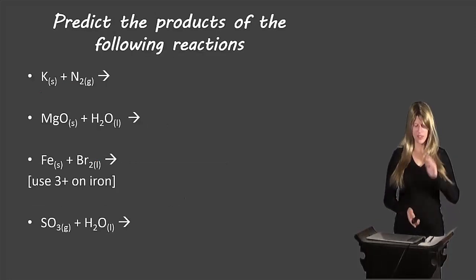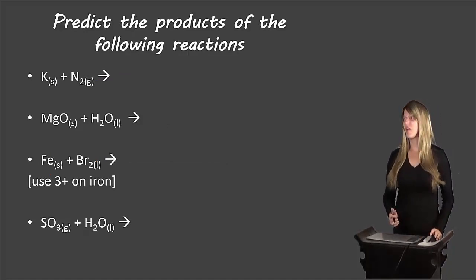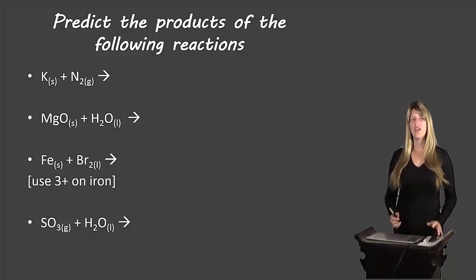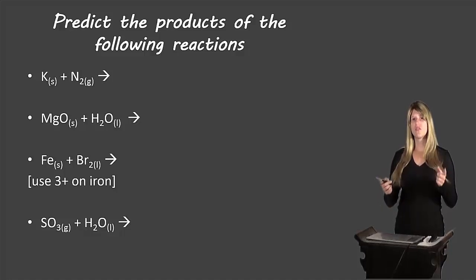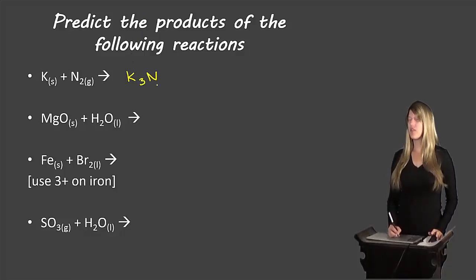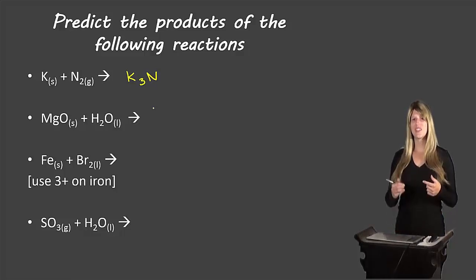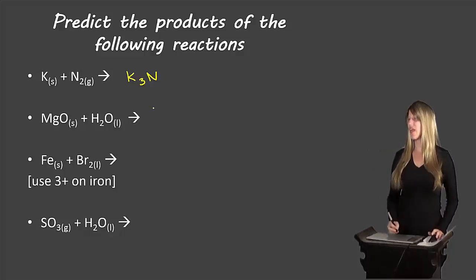Let's look at some examples. Here we have potassium and nitrogen coming together. These are two individual elements — one metal, one non-metal — so they form an ionic compound. Potassium has a 1+ charge and nitrogen a 3− charge; when we cross them over we end up with K3N as a solid.